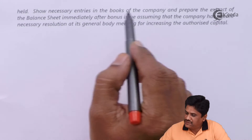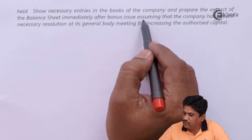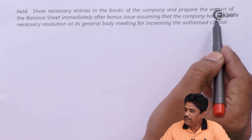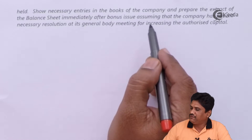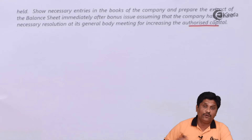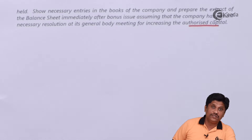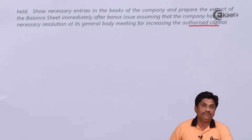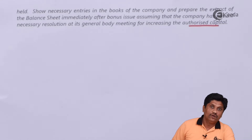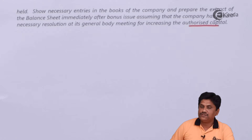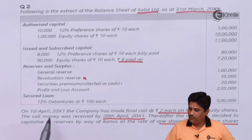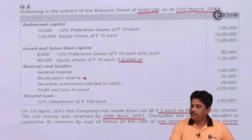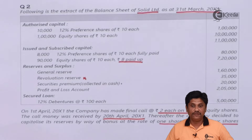One share for every four shares held. Show necessary entries in the books of the company and prepare the extract of the balance sheet immediately after the bonus issue, assuming that the company has passed necessary resolutions at the general body meeting for increasing the authorized capital. That means it is possible that by issuing the bonus shares, your authorized capital will go up, and for that we have taken necessary permission. So there will be changes in the authorized capital also.